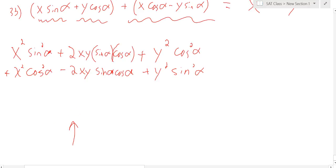So, let's get rid of that. So, that's all I did. And now you can see the middle terms cancel. So, we're going to be left with x squared cosine squared. Yeah, let's write this out, I guess. Cosine squared alpha plus x squared sine squared alpha plus y squared cosine squared alpha plus y squared sine squared alpha.